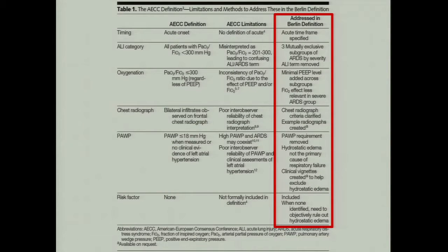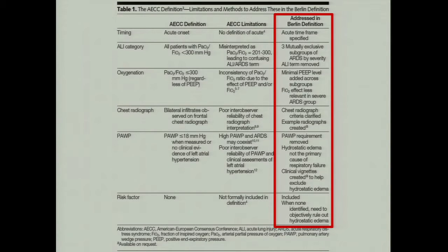The Berlin definition gave us a timeframe, provided three mutually exclusive severity subgroups based on PF ratio, and added a minimum PEEP requirement of five or more. It clarified that chest X-ray bilateral infiltrates must not be explained by collapse or atelectasis, and the pulmonary wedge pressure criterion of less than 18 mmHg was completely removed.